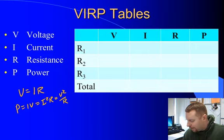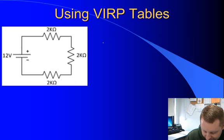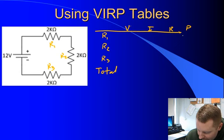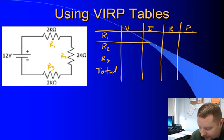Let's make a VERP table to analyze the same circuit with three 2 kilohm resistors. First, list the elements down the left-hand side: R1, R2, R3, and a row for total. Then add columns for voltage, current, resistance, and power. Keep in mind our units are the base SI units: V in volts, I in amps, R in ohms, power in watts.